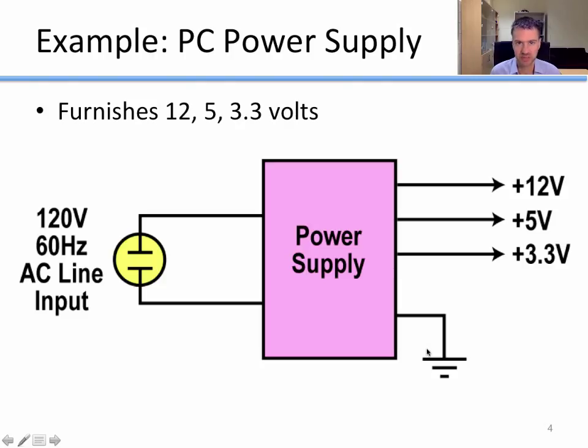As an example of a practical AC to DC power supply, the one in a desktop PC takes in an AC voltage like 120 volts, 60 hertz, and outputs three different DC voltages: 12 volts, 5 volts, and 3.3 volts.